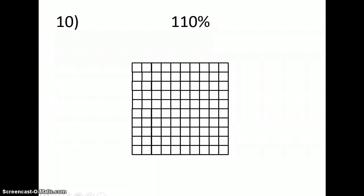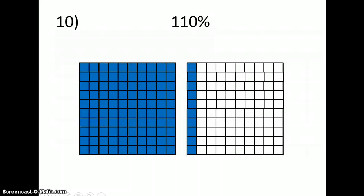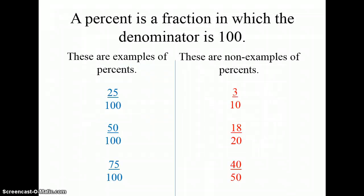If I wanted to shade in 110 percent, I would need two grids, because I would need to shade in all of the first grid for 100, and ten more of the second grid for 110 percent. And remember, percent always means out of 100. So, if I were to write this like a fraction, I would have 110 out of 100, or an improper fraction, and that is okay when we're dealing with percents, as long as my denominator is 100.